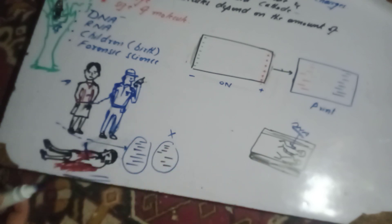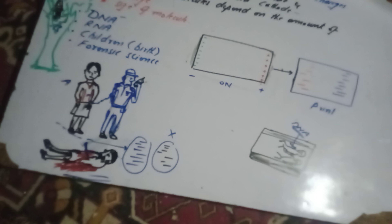Electrophoresis is also used to detect disease, cancerous cells, and genetic disorders through diagnosis. In summary, electrophoresis is the separation of different electrically charged molecules under the influence of an electrical field. Like chromatography, electrophoresis is also a separation technique.